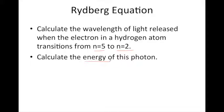So here's our Rydberg equation. Our problem tells us that the electron is falling from n equals 5 to n equals 2. So our equation becomes as follows.